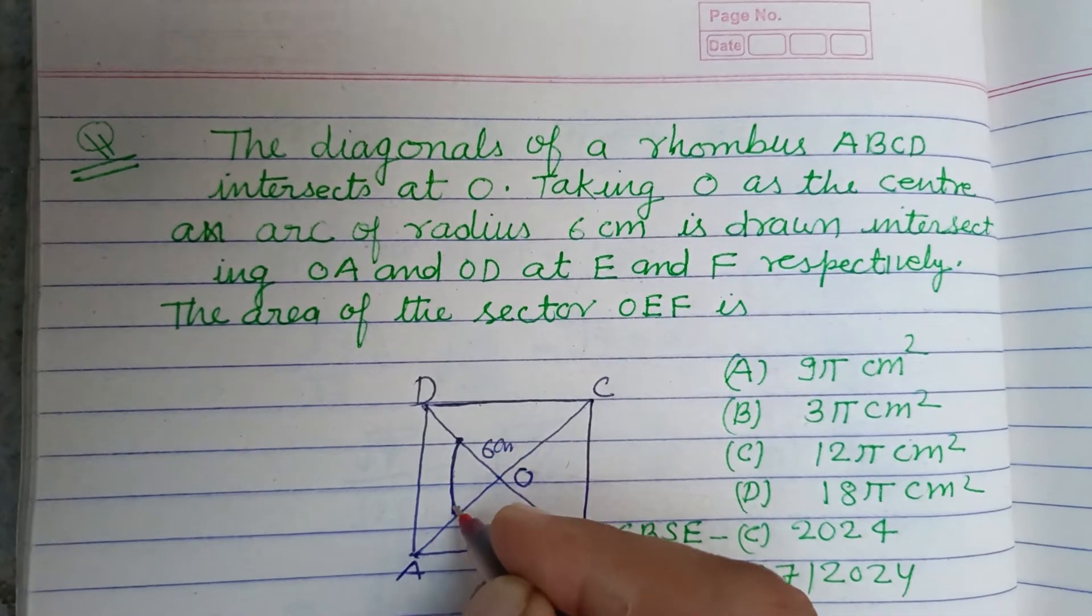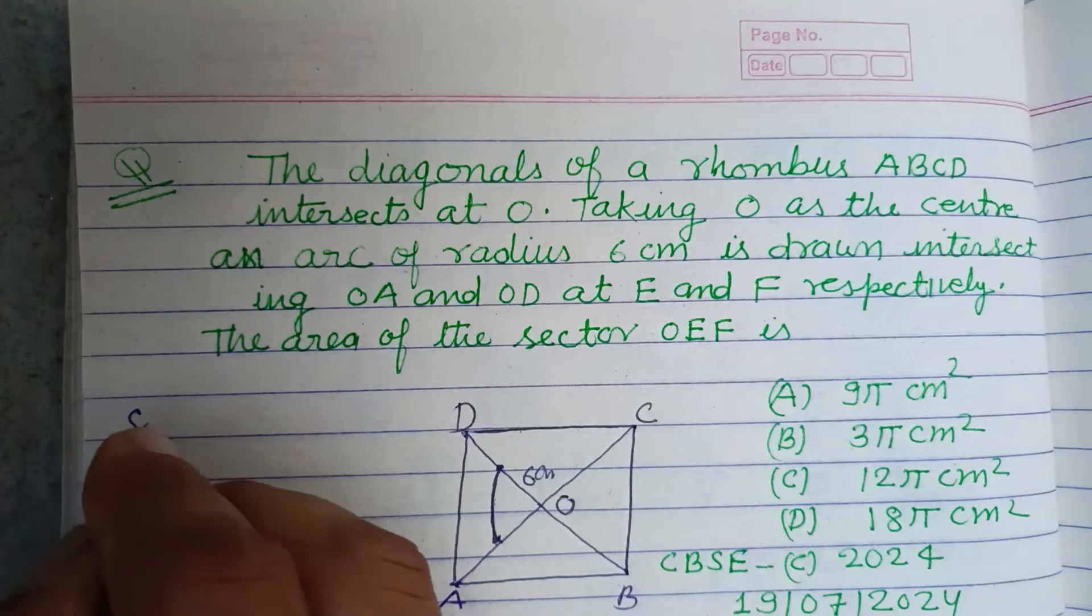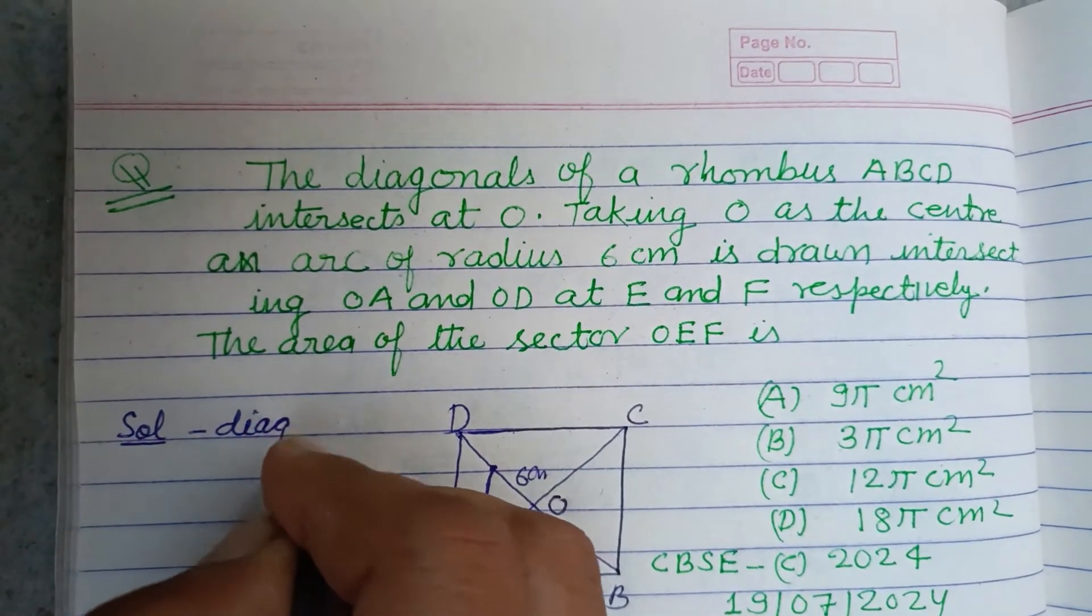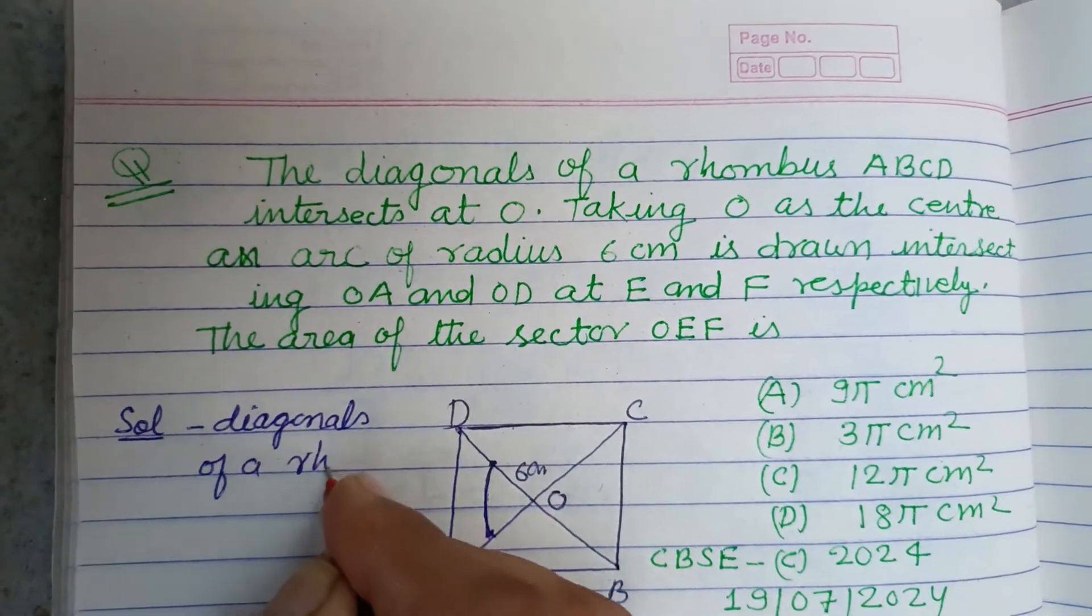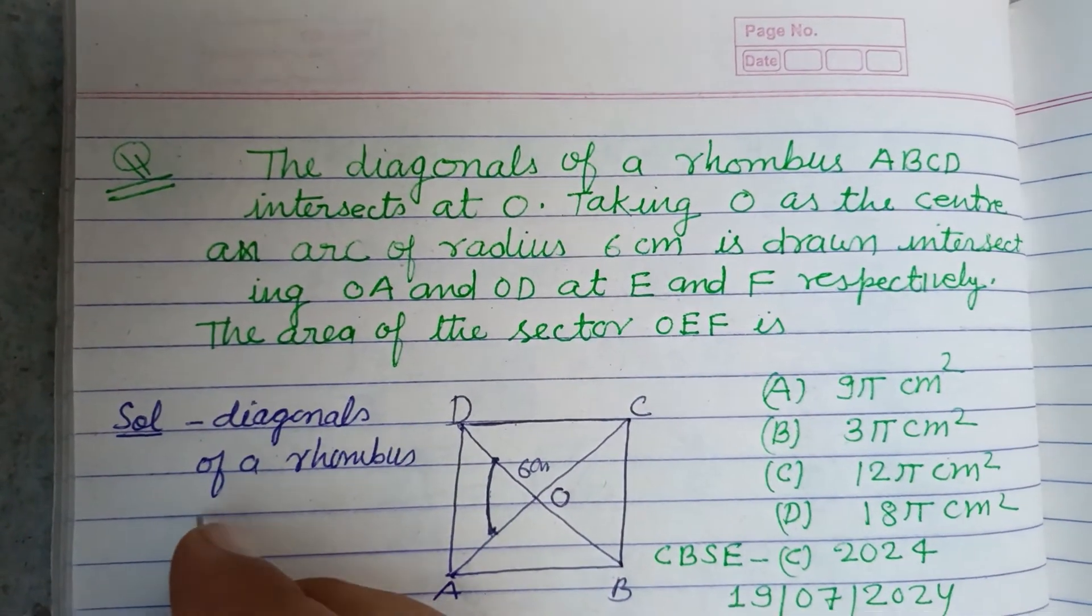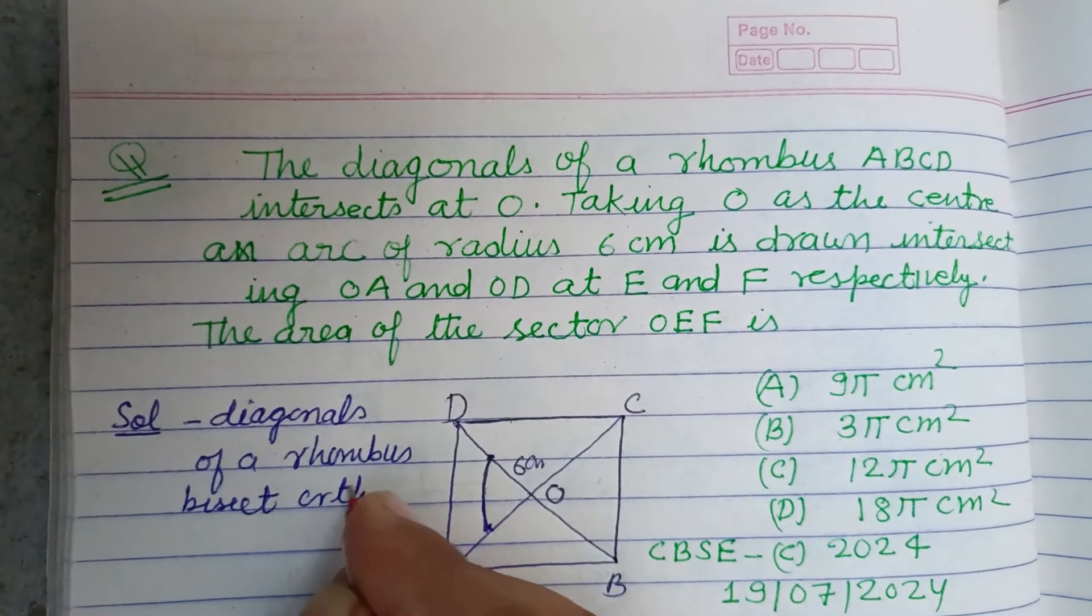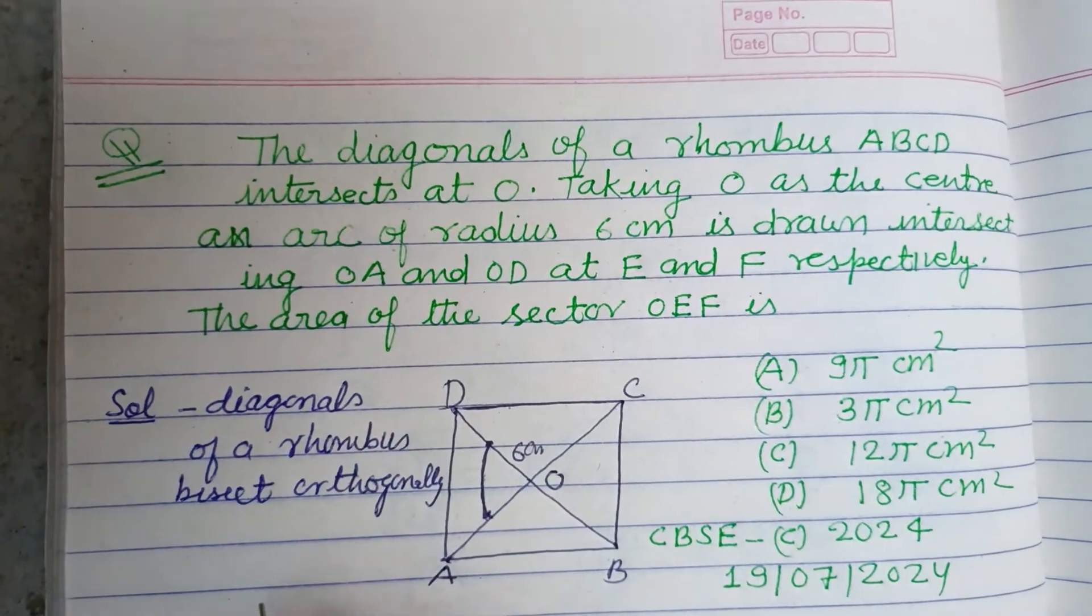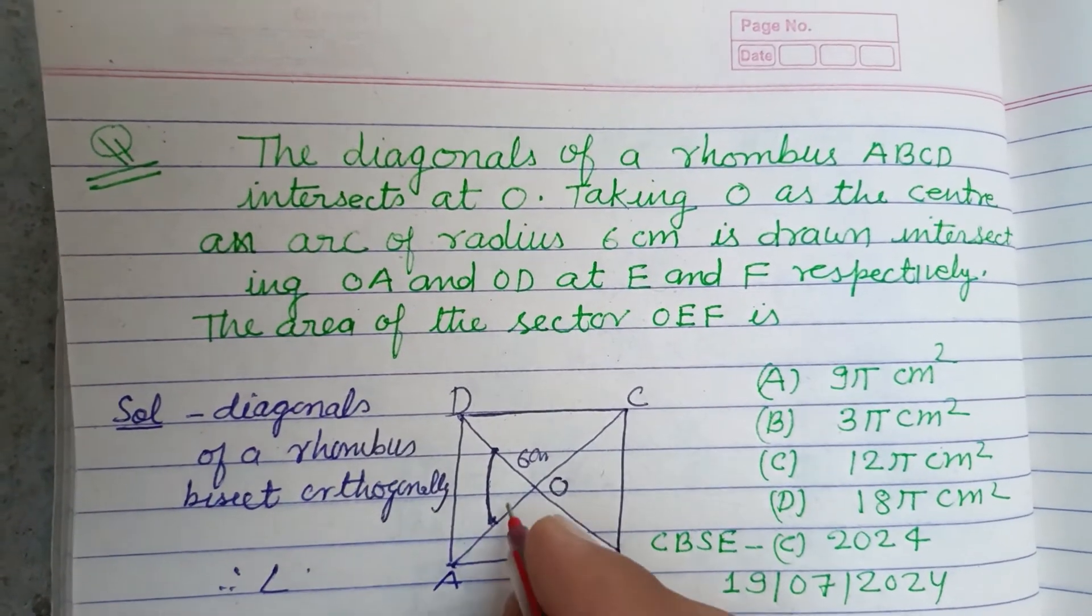And you know that diagonals of a rhombus bisect orthogonally. Therefore, angle... this is E.